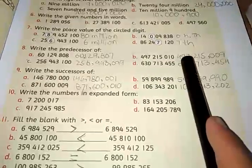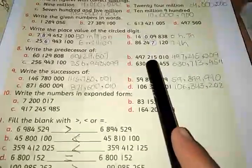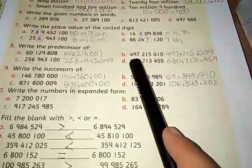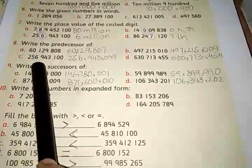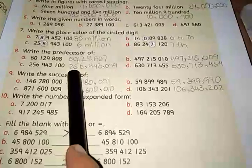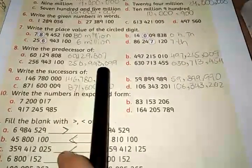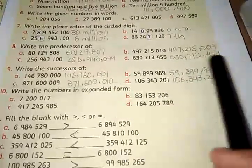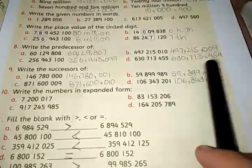In number B, we also write the predecessor of this number, so we write 497,215,009. Number C, now we have to write its predecessor, so we write 256,943,099. Last one, number D, its predecessor is 630,713,454.